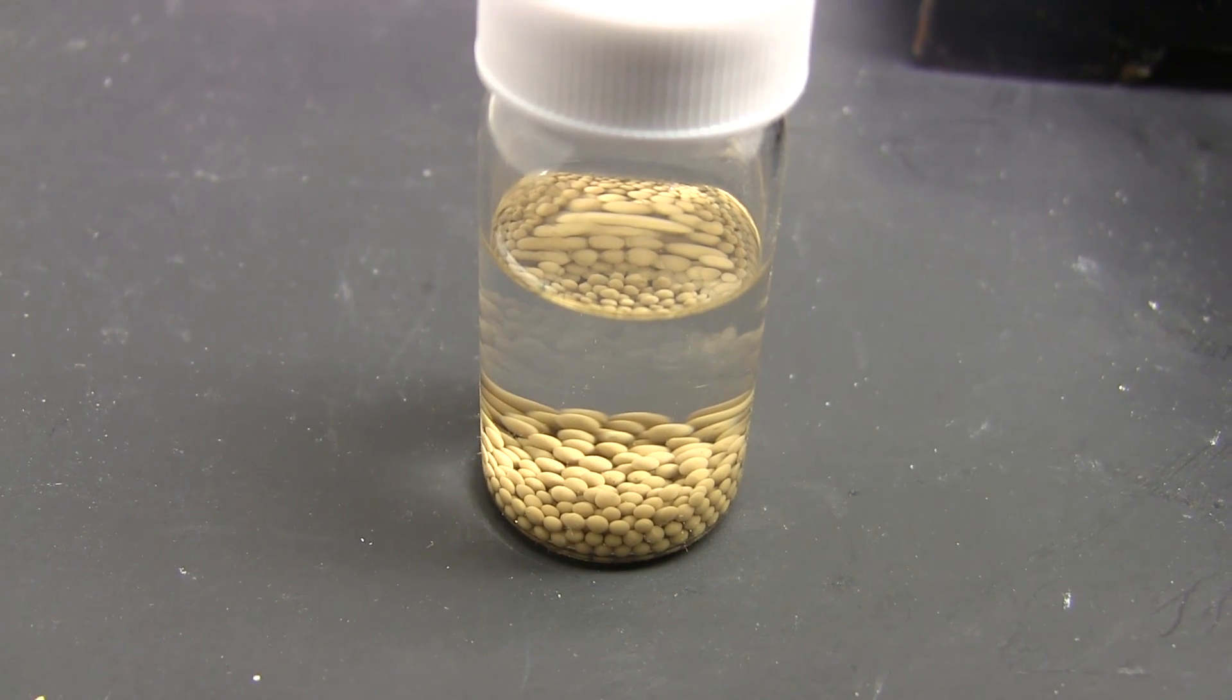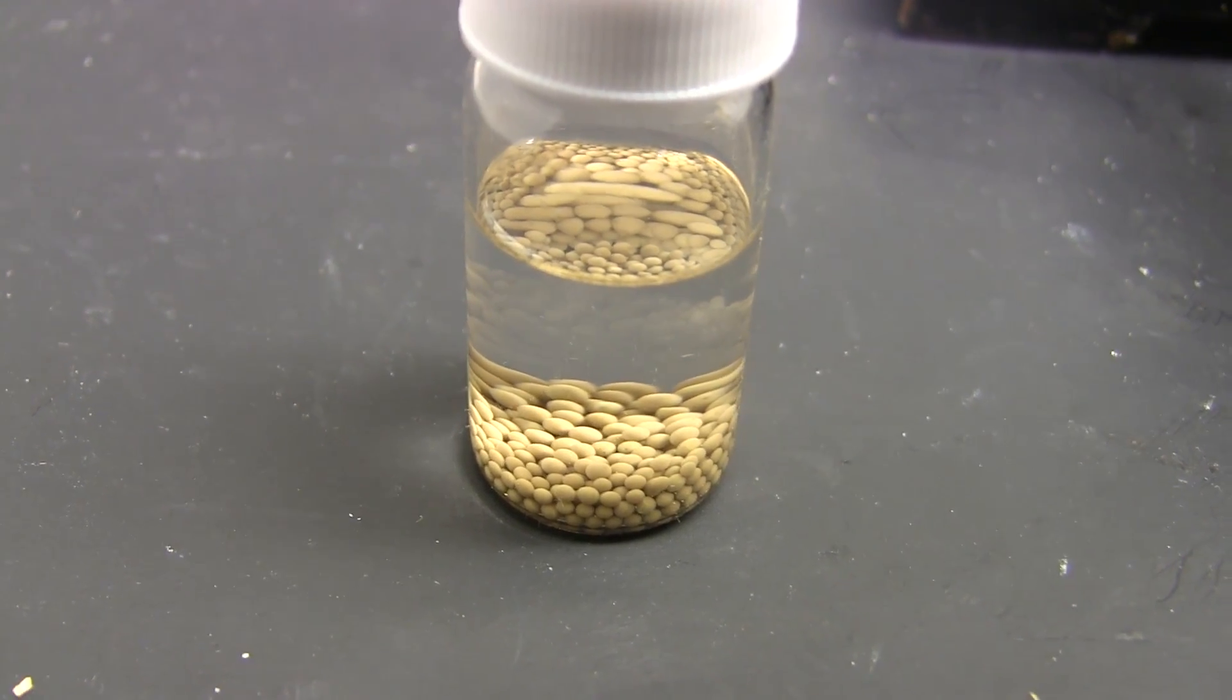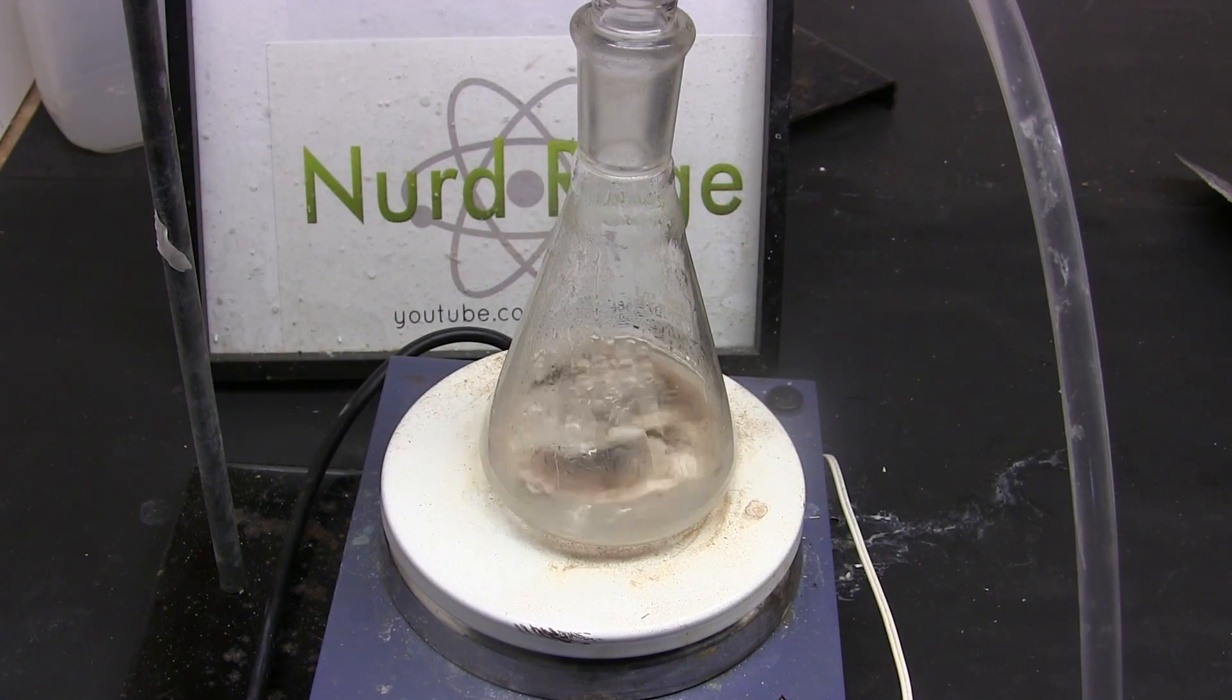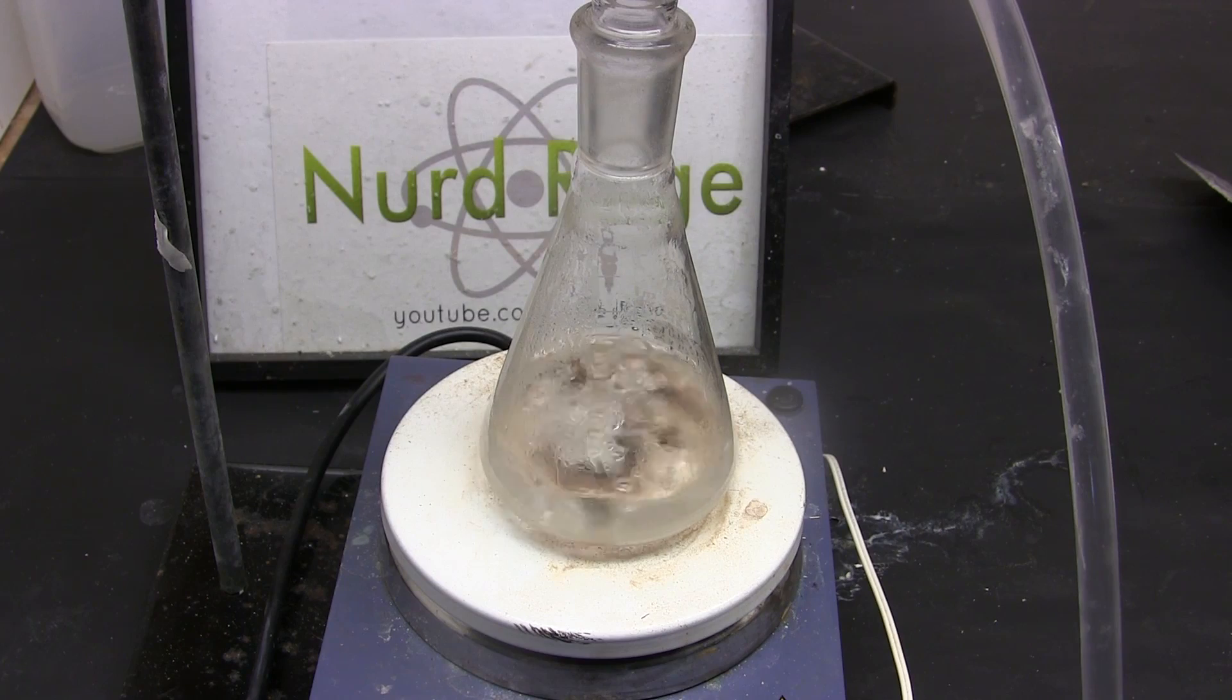Greetings fellow nerds. In this video we are going to make ethylpropionate ester by the classic process of Fischer esterification between ethanol and propionic acid.